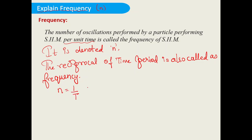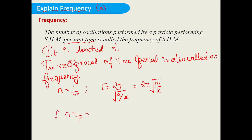The value of T is equal to 2π under root of a by x, which we understood in previous calculations, and also equal to 2π under root of m divided by k. So frequency n equals 1 upon 2π times under root of a by x, where acceleration per unit displacement is in the numerator. It is also equal to 1 upon 2π times under root of k by m. These are the formulas for frequency.